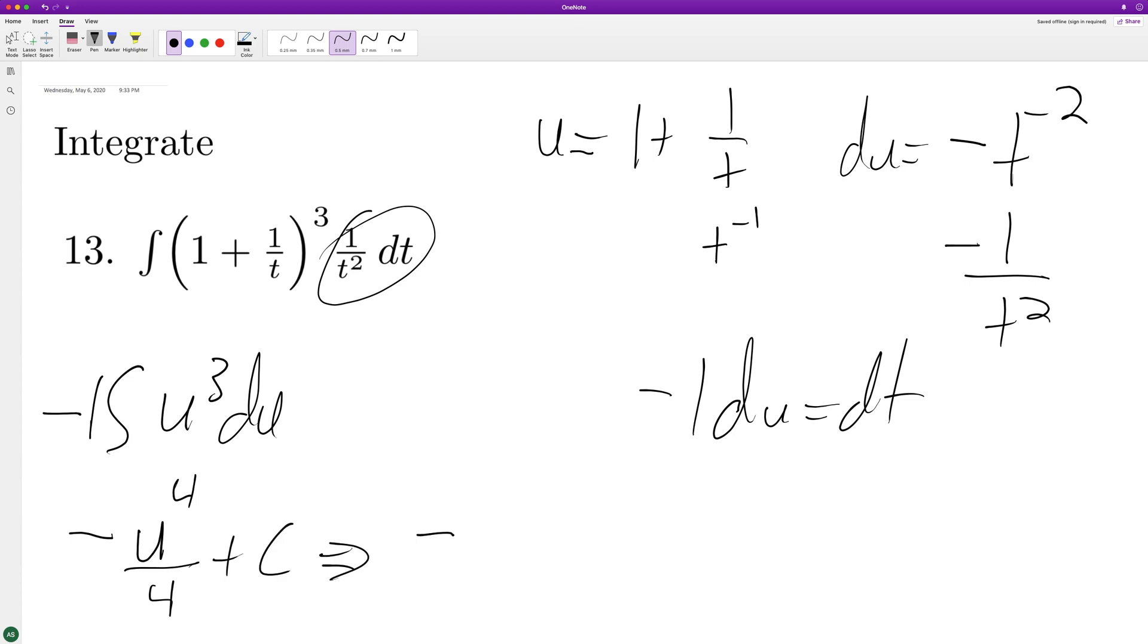Substitute back in, we get negative 1 plus 1 over t raised to the 4th over 4 plus c. And that's pretty much it.